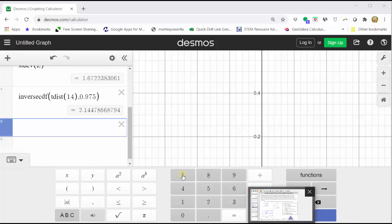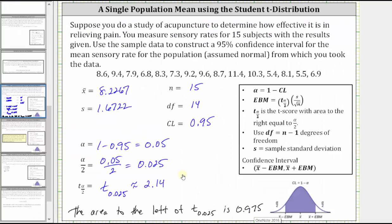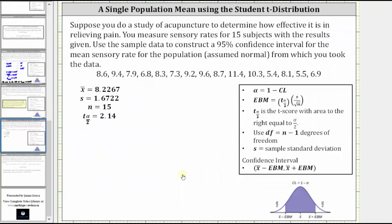Now that we have all the information, we can determine the confidence interval. Let's do this on the next slide. Let's begin by determining the error bound. The error bound is equal to the t-score of 2.14 times the sample standard deviation divided by the square root of the sample size. The sample standard deviation is 1.6722 divided by the square root of 15.